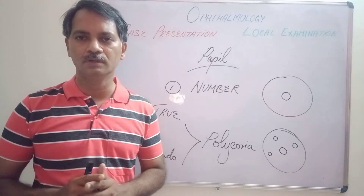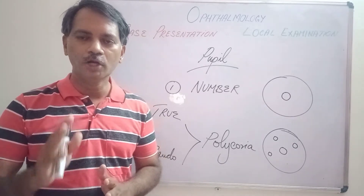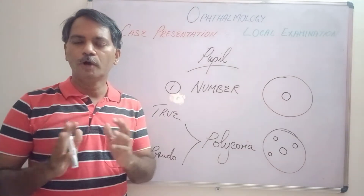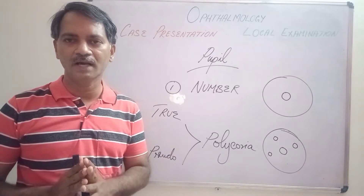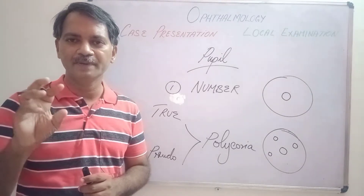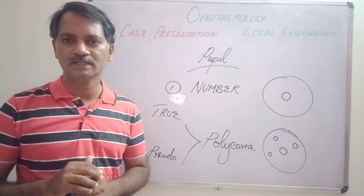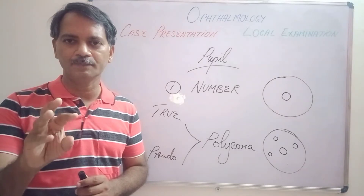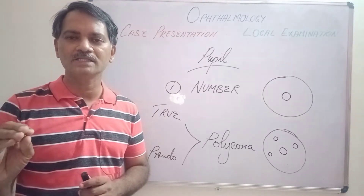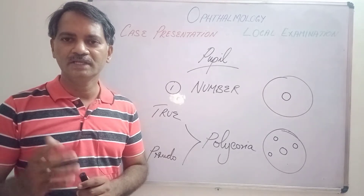Usually there will be only one pupil. If there are multiple openings in the iris, it is called polycoria. Polycoria can be of two types: true polycoria and pseudo-polycoria. True polycoria is a congenital abnormality where there will be two or more pupils, each with a sphincter pupillae, and each one can constrict when light is thrown on the eye. Pseudo-polycoria has one true pupil with a sphincter, while the other openings have no sphincter and will not constrict. Pseudo-polycoria is usually seen in juvenile glaucoma and posterior polymorphous dystrophy.